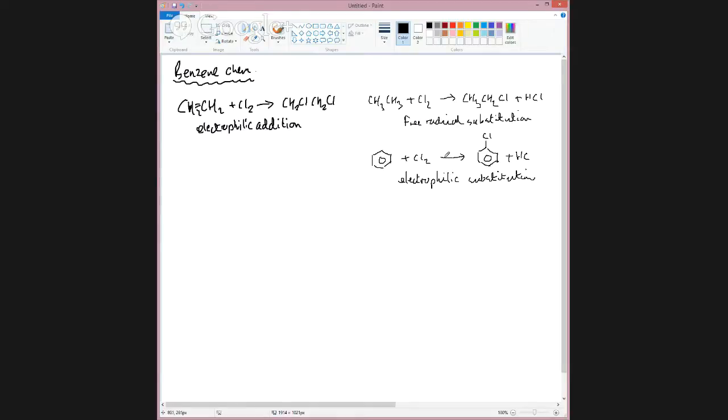And to make this reaction work, what you need is aluminium chloride as a catalyst. And what's going on is the aluminium chloride reacts with the chlorine to make a complex ion, AlCl4 minus, plus Cl plus. And Cl plus is your electrophile. So that's what's going to attack the benzene ring.